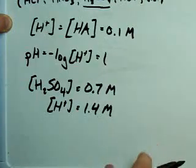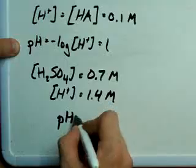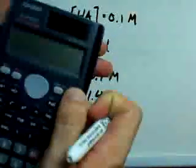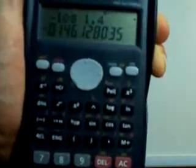This is the only trick to these kinds of calculations. And in that case, your pH is negative log 1.4. Or, in this case, negative 0.15.